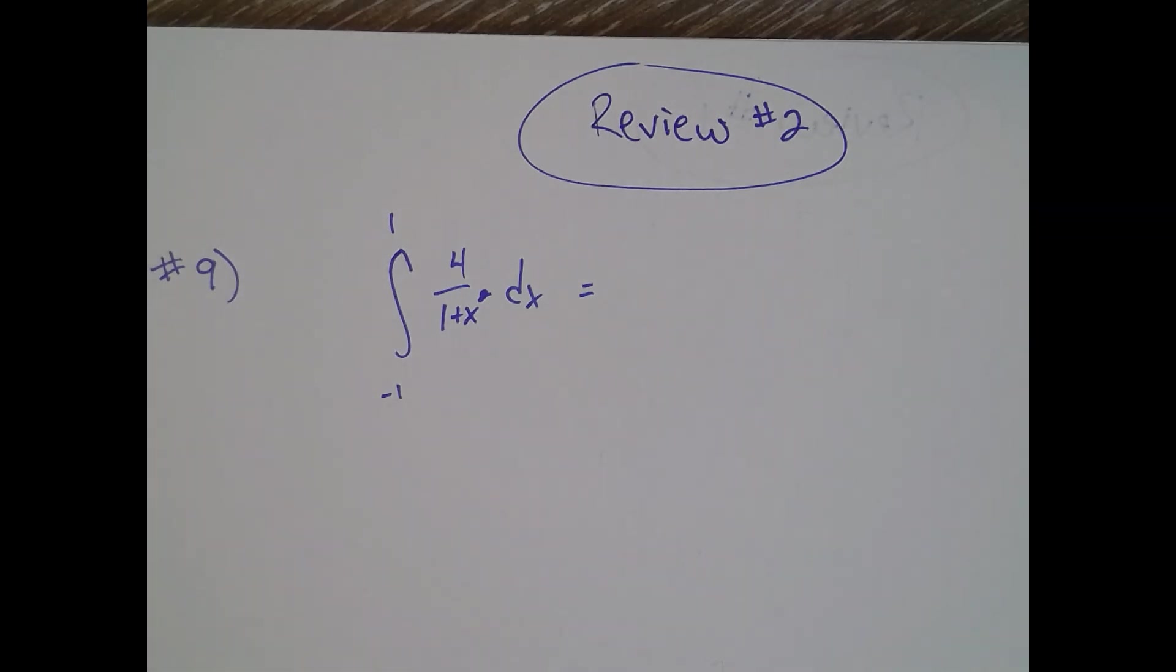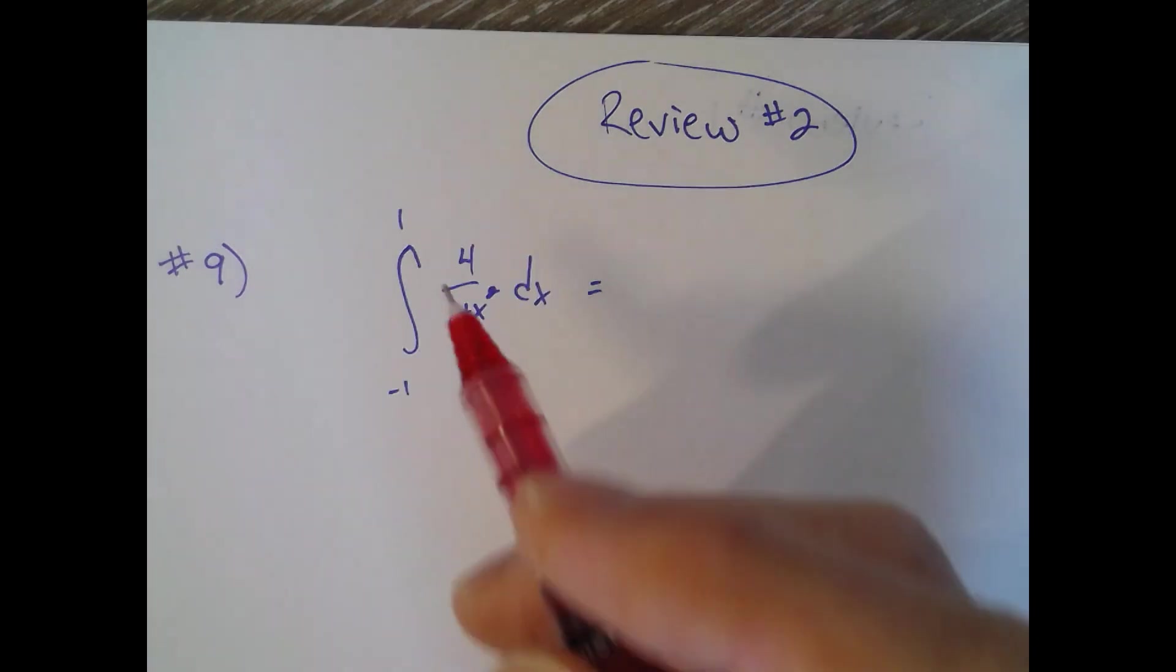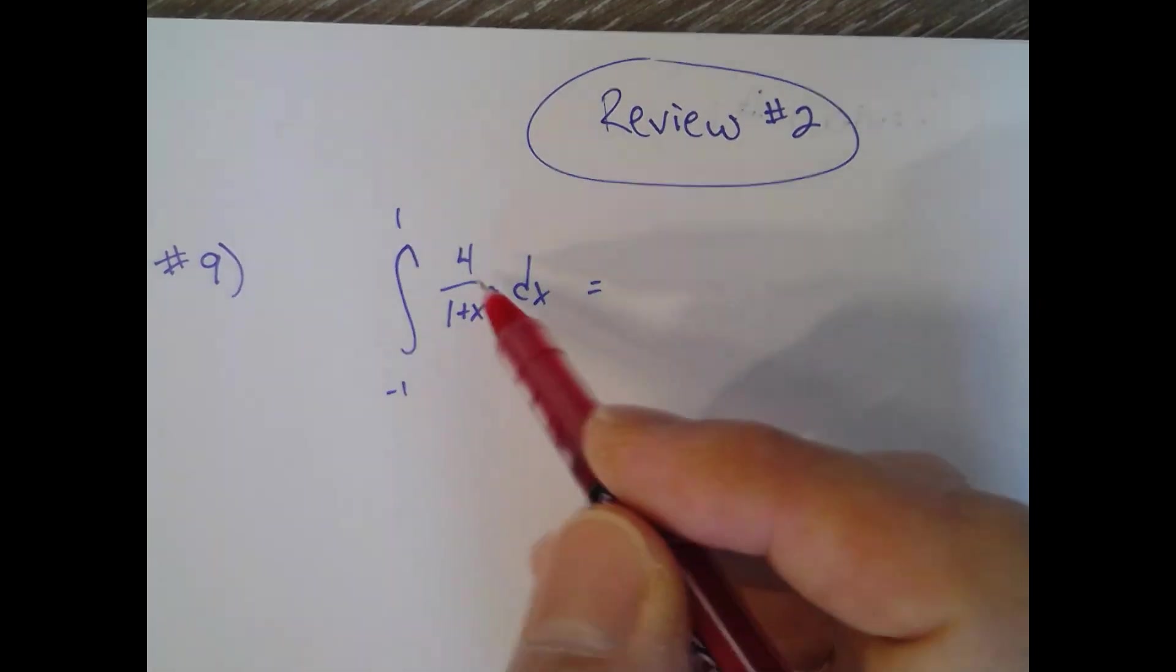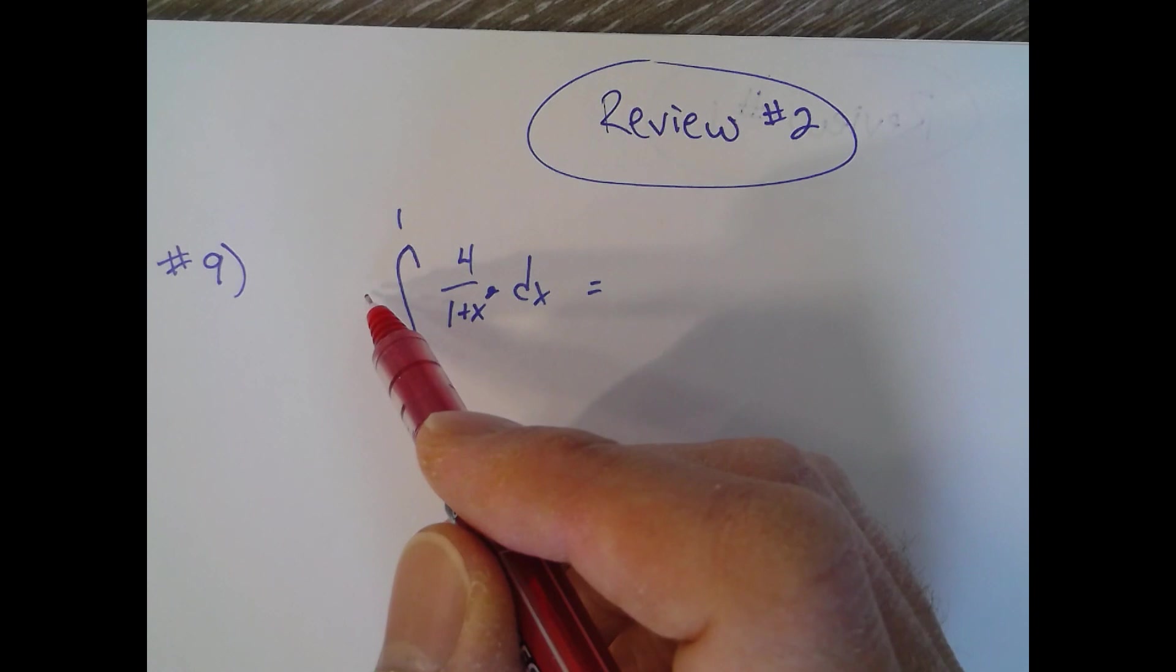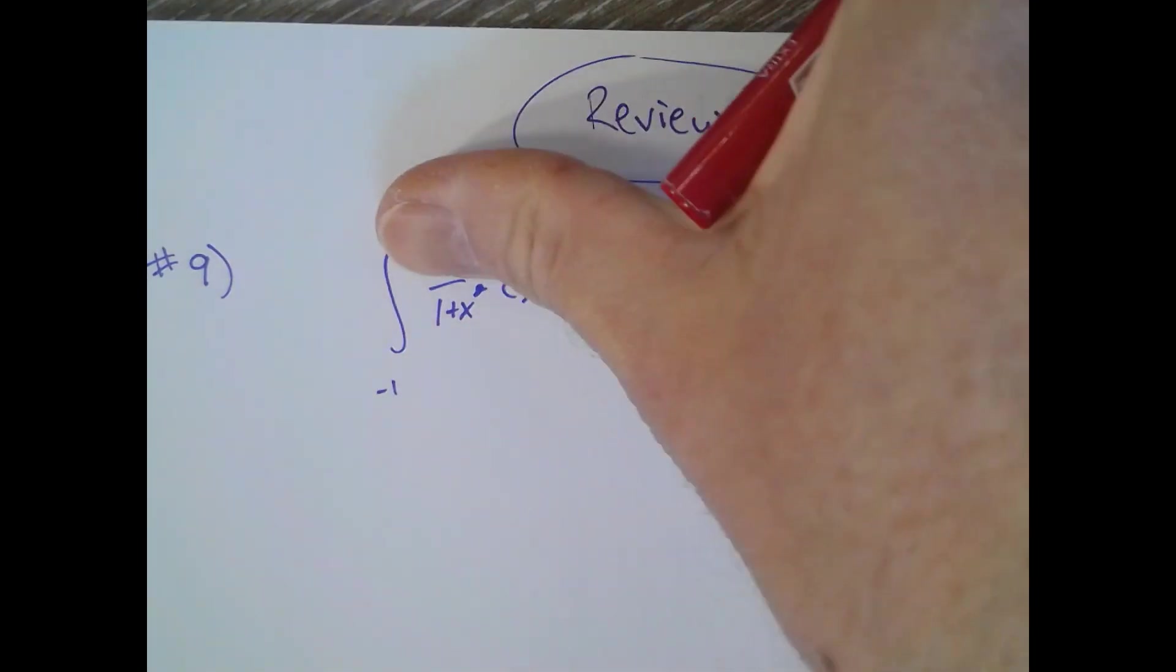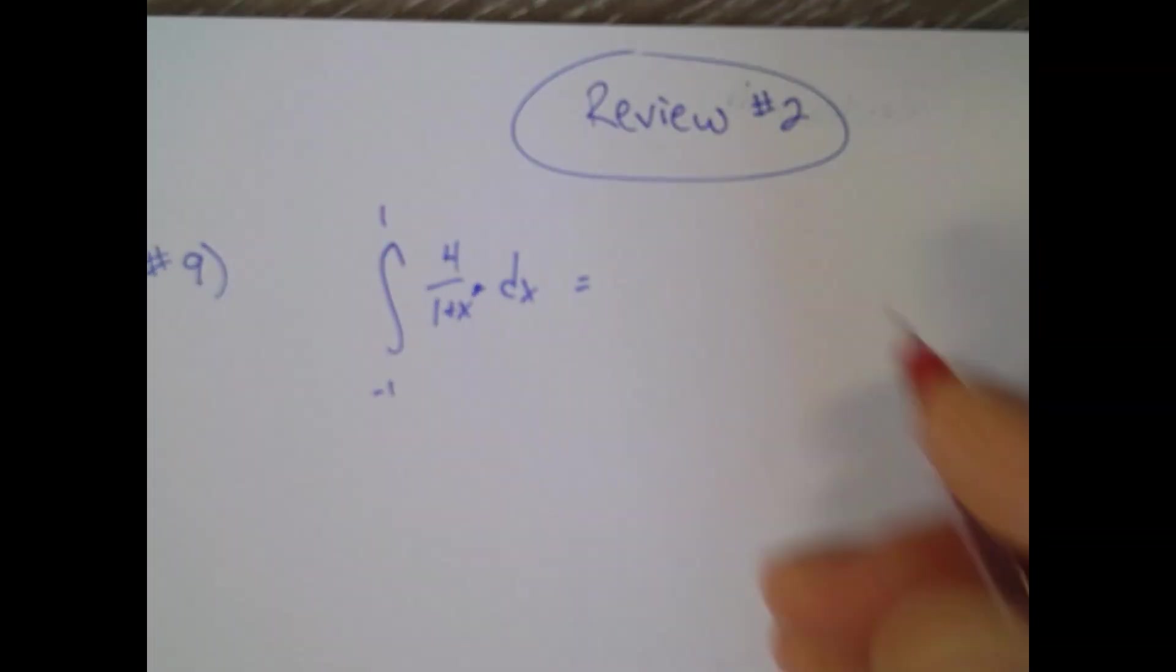Review number two, problem number nine. We're integrating four over one plus x squared. The four can be moved out front, but think of it as one over one plus x squared, and that's just inverse tangent. So we have four inverse tangent of x.